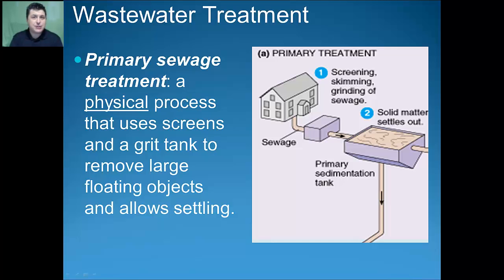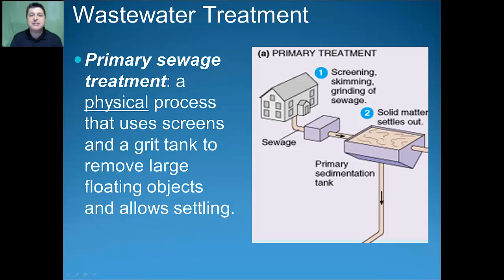The first stage for most wastewater treatment is primary sewage treatment. This is a physical process that uses screens and a grit tank to remove large floating objects and allows solid material to begin settling out and separating from the liquid. This is done in what's known as a primary settling tank.